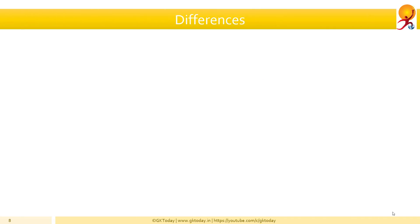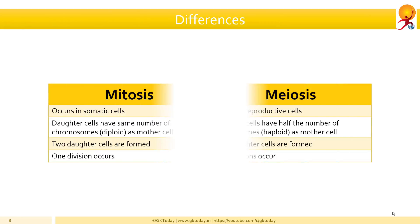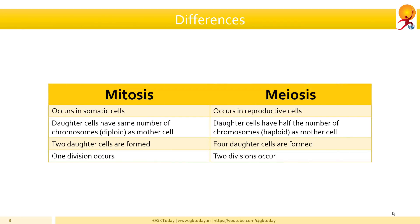We now go to the differences between mitosis and meiosis. Mitosis occurs in somatic cells whereas meiosis occurs in reproductive cells. The daughter cells in mitosis contain the same number of chromosomes or diploids as that of parent cells. In meiosis, they contain half the number of chromosomes or haploids. Two daughter cells are formed in mitosis whereas four daughter cells are formed in meiosis. Only one division occurs in mitosis whereas two divisions occur in meiosis.